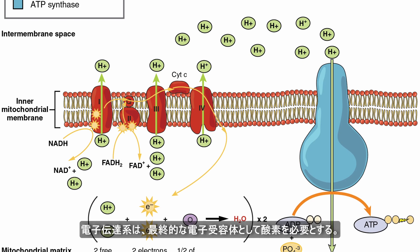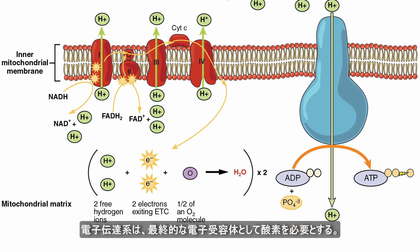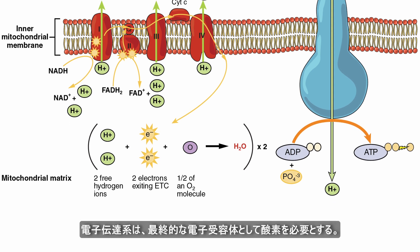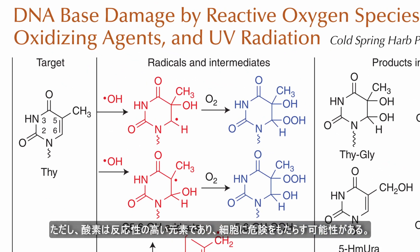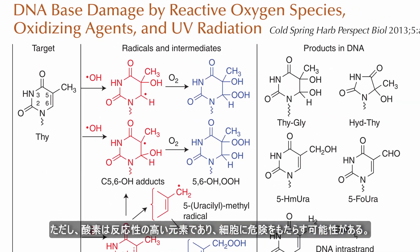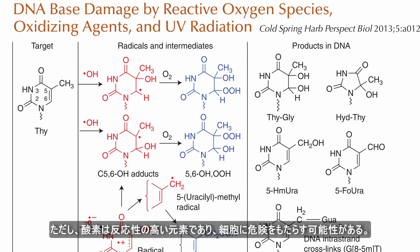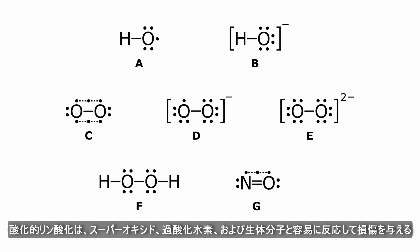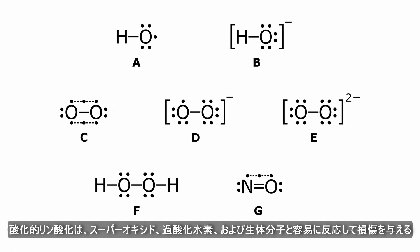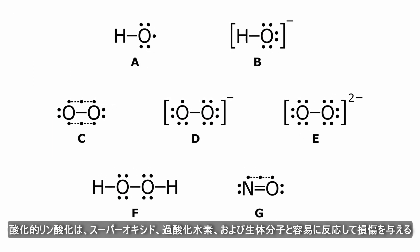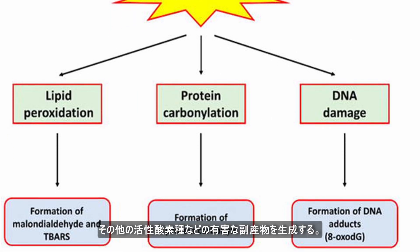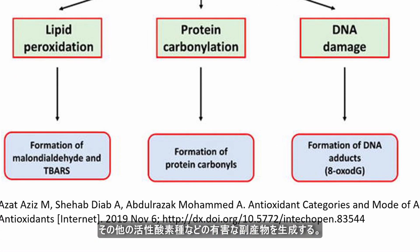The electron transport chain requires oxygen as the final electron acceptor, but oxygen is a highly reactive element that can pose a danger to the cell. Oxidative phosphorylation produces hazardous byproducts such as superoxide, hydrogen peroxide, and other reactive oxygen species that can readily react with and damage biomolecules.